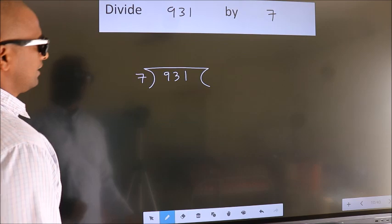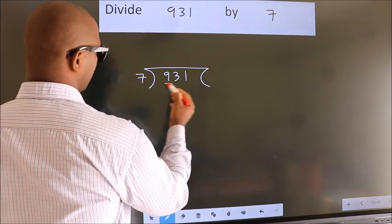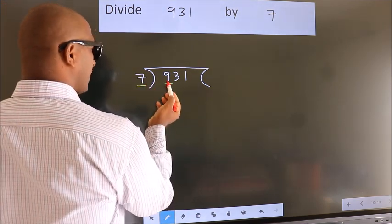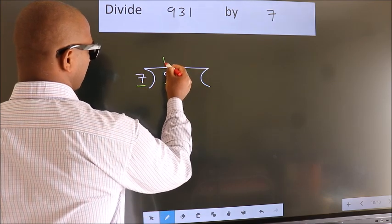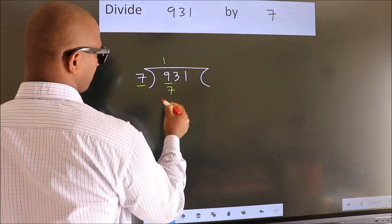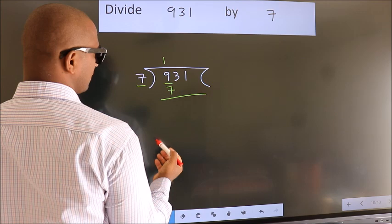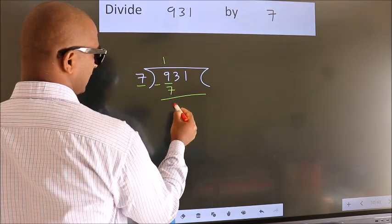Next. Here we have 9, here 7. A number close to 9 in 7 table is 7 once 7. Now, we should subtract. We get 2.